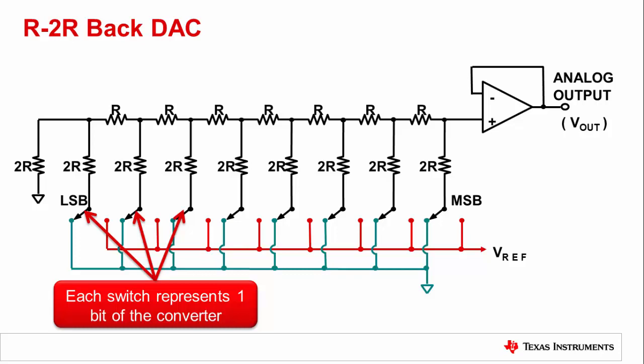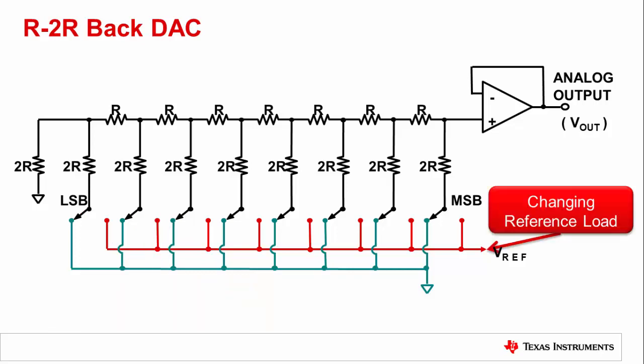If we examine the R2R topology, it should be noticed that looking into the reference node of an R2R DAC exhibits a dynamic input impedance. If you observe the switches for each R2R leg, you will notice that they are either switched into the reference node or to the ground node, hence a dynamic input impedance related to code.